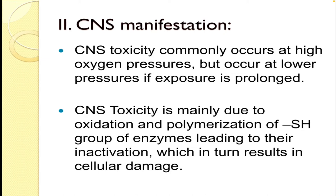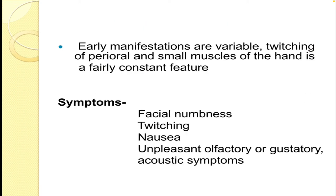Another important manifestation of oxygen toxicity is CNS toxicity, which commonly occurs at high oxygen pressure. However, it may also occur at lower pressure if exposure is prolonged. It is mainly due to the oxidation and polymerization of the SH group of enzymes, leading to their inactivation, which in turn results in cellular damage. Early manifestations are variable. Twitching of the perioral and small muscles of the hand are fairly constant features, and other symptoms include facial numbness, twitching, nausea, unpleasant olfactory and gustatory sensations, and acoustic symptoms.